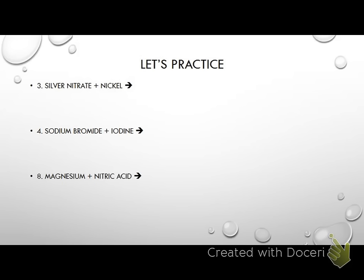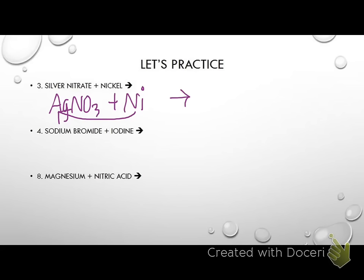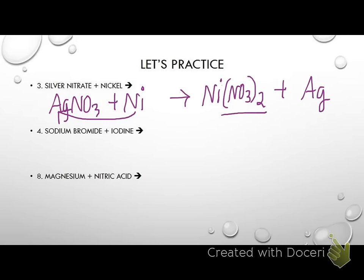Some of our examples: I have silver nitrate, written as AgNO₃, plus nickel. I want to see if the metal will replace the other metal. I look for nickel — it is above silver, so it does happen. I would get nickel nitrate — nickel is normally a plus two — and then silver by itself as a product.